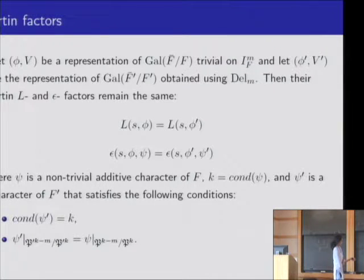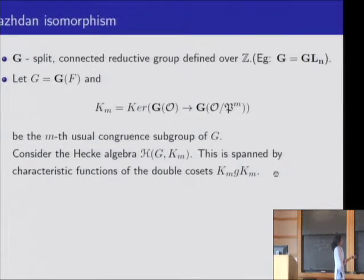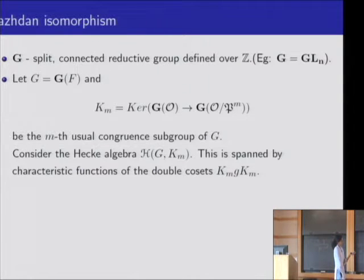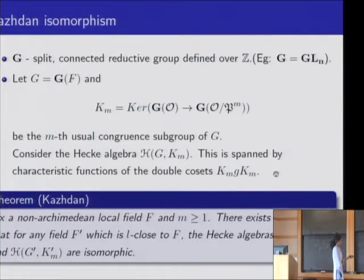This is the story on the Galois side. There is a similar story for reductive groups due to Kazhdan. We fix G to be any split connected reductive group defined over Z — for example, think of G as GL_N. We take the F-points of G and define K_M to be the kernel of G(O) to G(O mod P^M); this is the M-th usual congruence subgroup. We consider the Hecke algebra H(G, K_M), which is spanned by the characteristic functions of the double cosets K_M \ G / K_M.